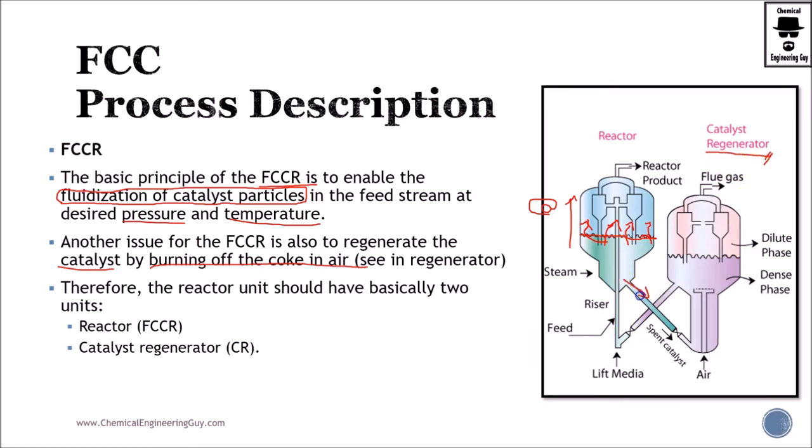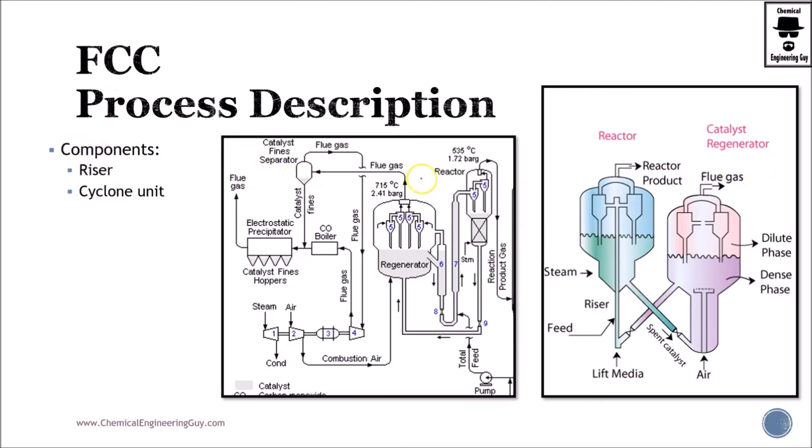So what we're going to do is send the spent catalyst. Therefore, we have two main units, the reactor and the catalyst regenerator. Let's talk about the units inside the reactor. You have a riser and a cyclone unit. So the riser is this one and the cyclone units are this one right here.